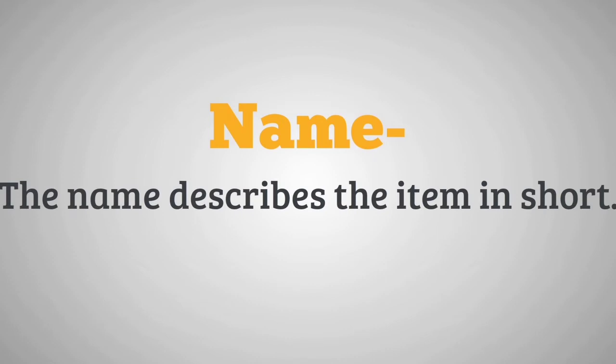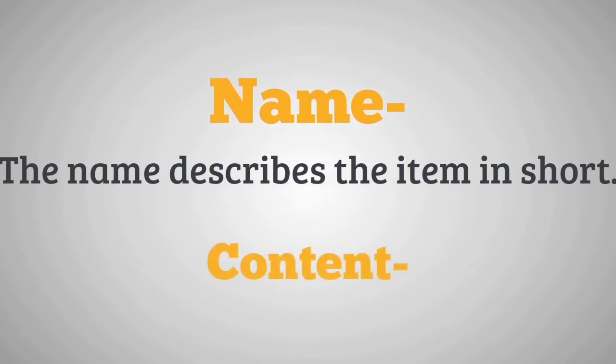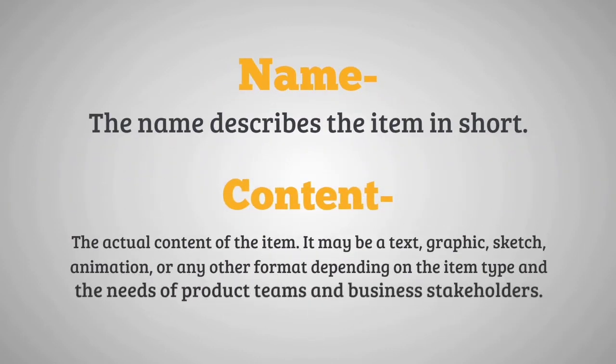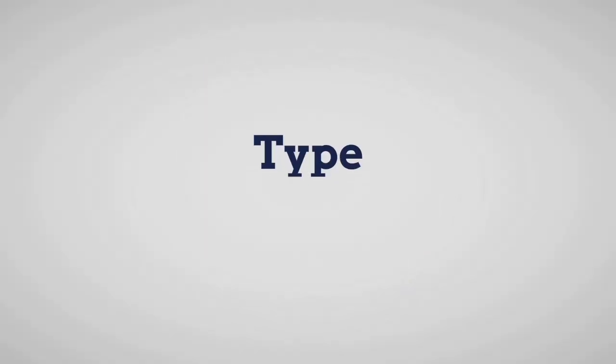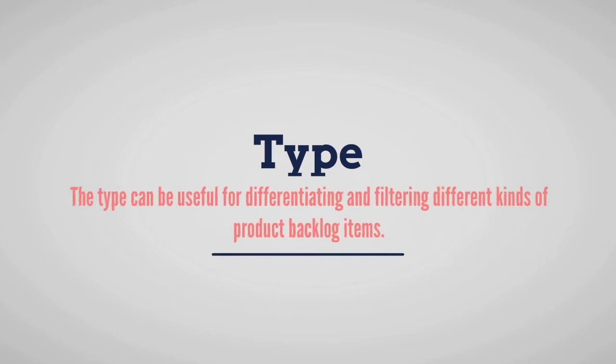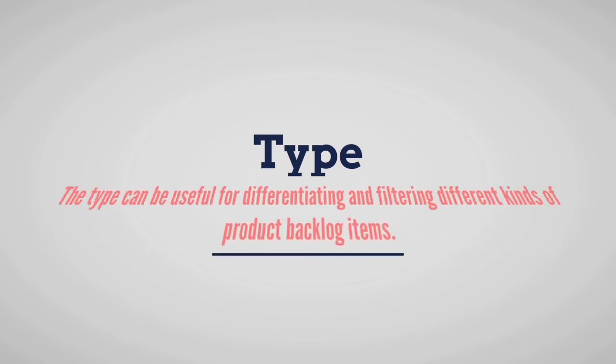Name: describes the item in short. Content: the actual content of the item — it may be a text, graphic, sketch, animation, or any other format depending on the item type and the needs of product teams and business stakeholders. Type: can be useful for differentiating and filtering different kinds of product backlog items.